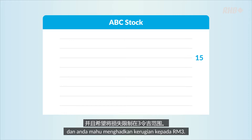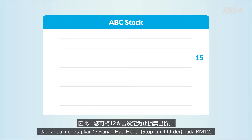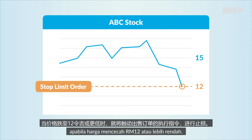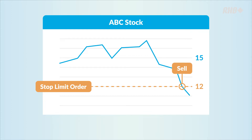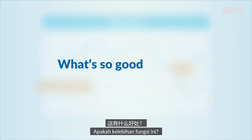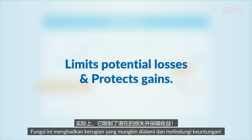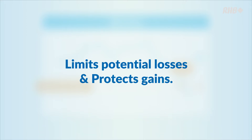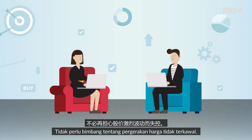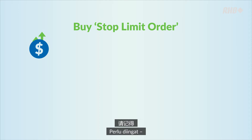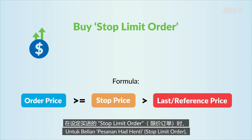Here's an example for a sell stop limit order. Say you own ABC stock at 15 ringgit and you wish to limit your losses to 3 ringgit, so you put out a sell stop limit order at 12 ringgit. The sell order will be triggered when the price falls to 12 ringgit or lower.